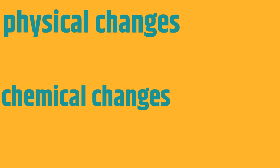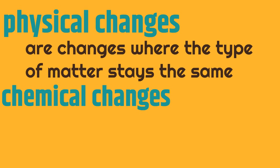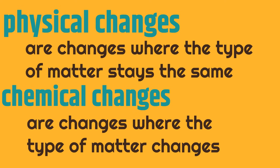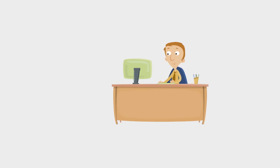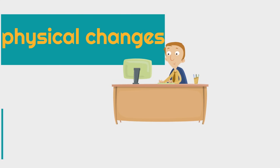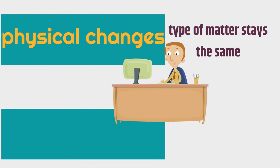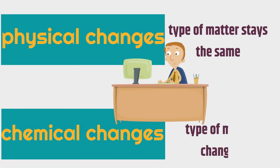So what are physical and chemical changes? Physical changes are changes where the type of matter stays the same. Chemical changes are completely different — chemical changes are changes where the type of matter itself changes. With physical change, the type of matter stays the same even though it changes. But with chemical changes, the type of matter changes.